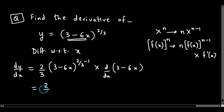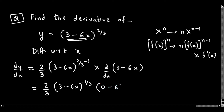Now let's see what comes next. We have 2 by 3 times 3 minus 6x raised to 2 by 3 minus 1, which gives us the exponent 2 minus 3 over 3, that is minus 1 by 3. Then we multiply by the derivative of f(x).